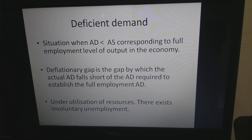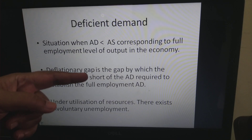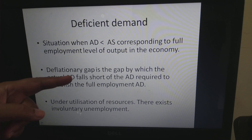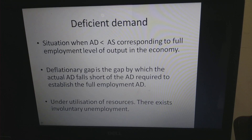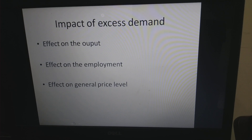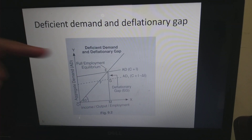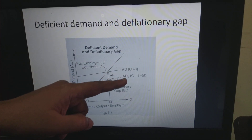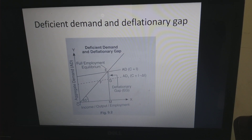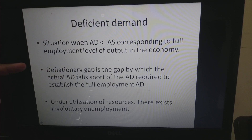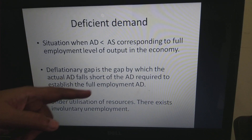Deflationary gap is a gap by which the actual AD falls short of the AD required to establish full employment. Corresponding to the full employment level, AD1 is short of the full employment AD — and that shortfall is the deflationary gap. There is definitely an underutilization of resources and there will be involuntary unemployment.